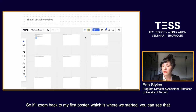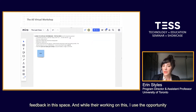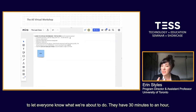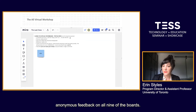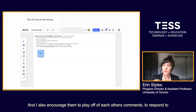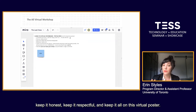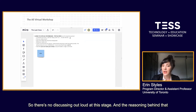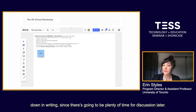The first poster is really just a practice run, so the class can test drive leaving feedback in this space. While they're working on this, I use the opportunity to let everyone know what we're about to do. They have 30 minutes to an hour — depending on the length of the class session — to leave completely anonymous feedback on all nine of the boards. I also encourage them to play off each other's comments, to respond to each other, and to revisit boards they've already commented on to see if anyone has responded to them.